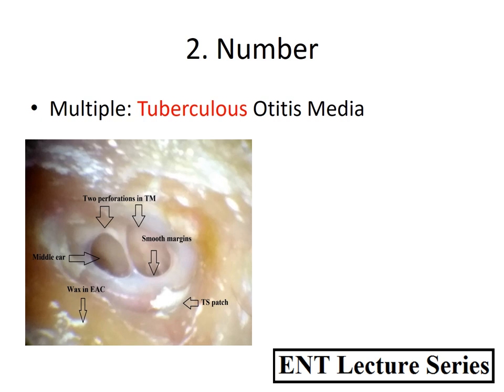The second feature is number. Generally, a tympanic membrane perforation is single. However, in tuberculous otitis media, multiple perforations can be seen, as shown in this endoscopic picture with two perforations and a thin remnant of membrane between them. Ultimately, these two will coalesce to form a large perforation.